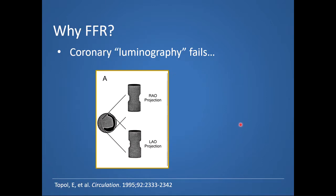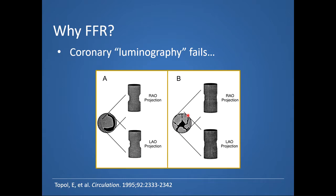But why FFR, especially when coronary angiography has unrivaled spatial and temporal resolution and remains a roadmap for both interventional cardiologists and cardiothoracic surgeons alike? Well, as early as the 1960s, it was obvious that the coronary angiogram is limited. The angiogram is a two-dimensional silhouette — a luminogram — of a three-dimensional vascular lumen. This is illustrated with an eccentric plaque where in the RAO projection we don't get the true severity of the lesion, and in the LAO projection we don't do much better. It's even worse with a concentric stenosis, where in both the RAO and LAO projections we're not able to truly capture the actual severity of the stenosis.